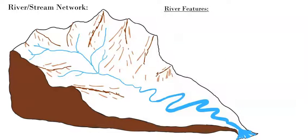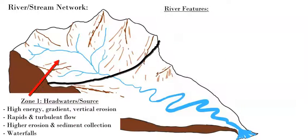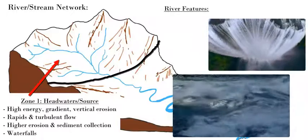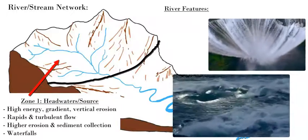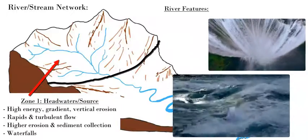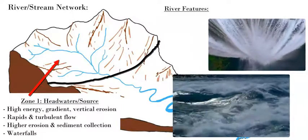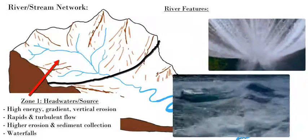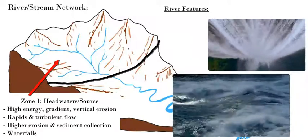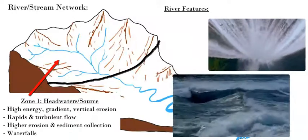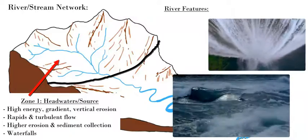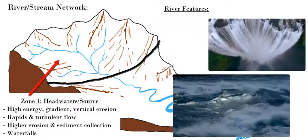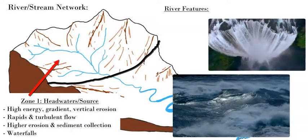In the upper headwater zone, there is higher velocity, more turbulent water versus laminar flow. You have rapids and waterfalls, a vertical erosion profile with very V-shaped valleys, and a lot of sediment removal.